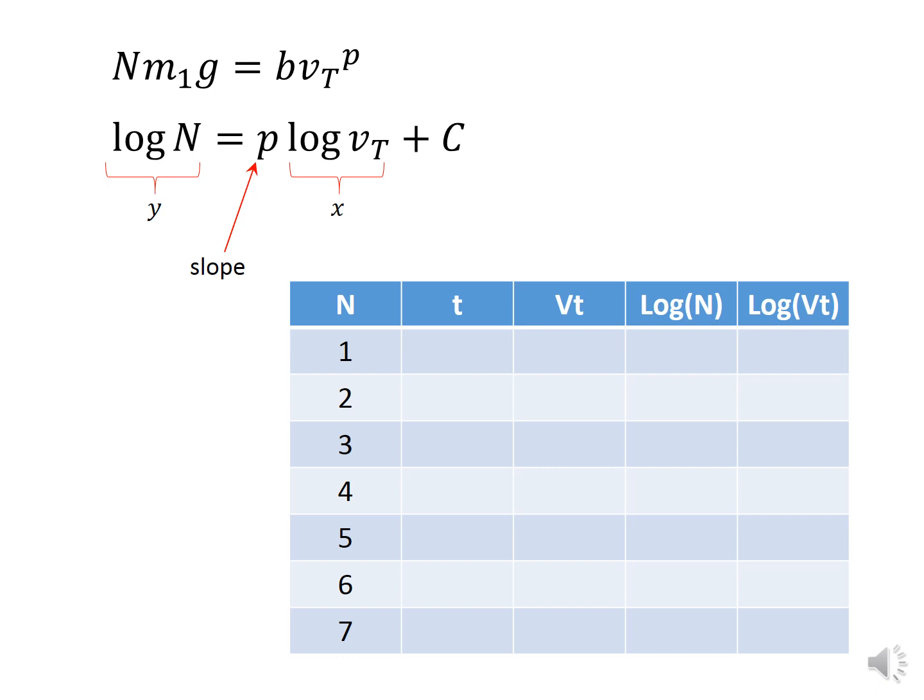But notice that if the y-axis is the log of n and the x-axis the log of the terminal speed, a graph of log n versus log V sub T should have a slope P.